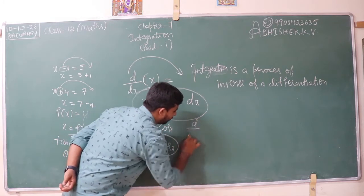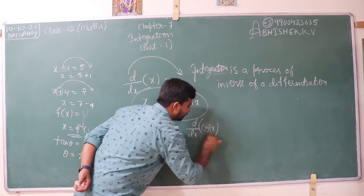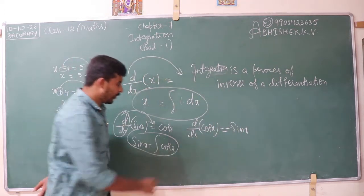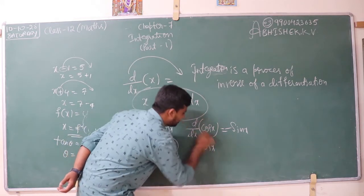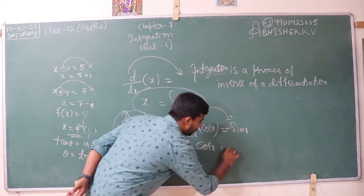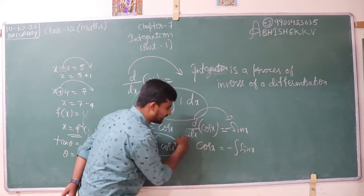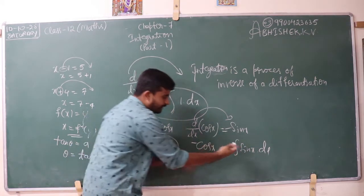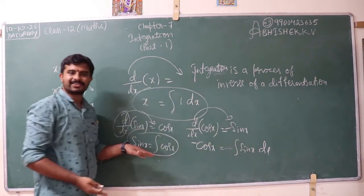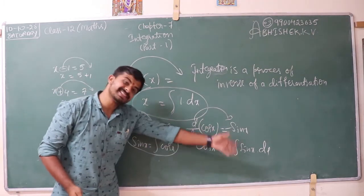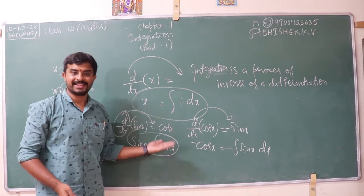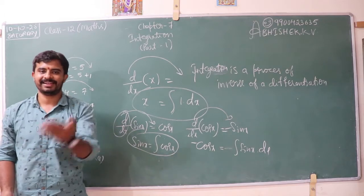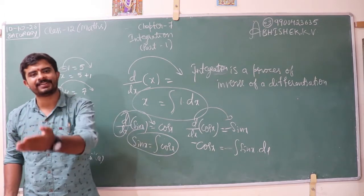What is the derivative of cos x? Derivative of cos x is minus sin x. So if I transfer this derivative to the RHS, minus integral of sin x dx. Transferring the minus sign gives us: integration of sin x is minus cos x. Differentiation of cos x is minus sin x. This is the beauty of mathematics, especially in differentiation and integration — it is just the inverse of differentiation. Integration is the process of inverse of differentiation.